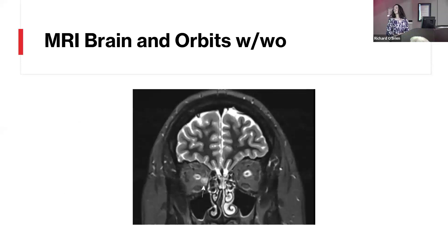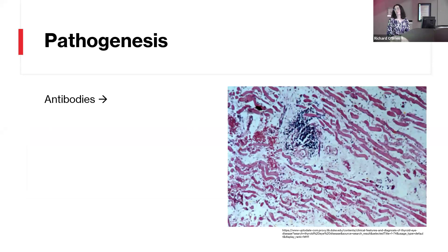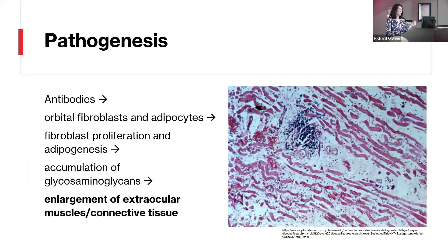Here is her MRI brain in orbits with and without contrast. As you can see, she has swelling of the medial rectus on the right side. So while we were originally consulted for optic neuritis, she was diagnosed with thyroid eye disease. Thyroid eye disease is an autoimmune condition typically seen in people with Graves' disease, but it can also be seen in individuals with Hashimoto's thyroiditis. The antibodies attack the orbital fibroblasts and adipocytes behind the eye, causing fibroblast proliferation and adipogenesis, which leads to accumulation of glycosaminoglycans — causing enlargement of the extraocular muscles and connective tissue.